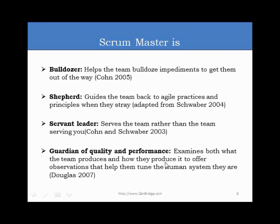There are various names used to describe the Scrum Master role: bulldozer, shepherd, servant leader, and guardian of quality and performance. These names help us visualize the Scrum Master's role. As a bulldozer, he helps the team bulldoze the impediments that come in their way so the team can perform.